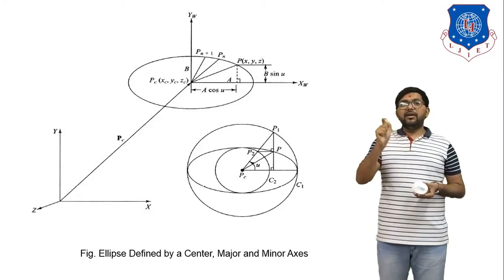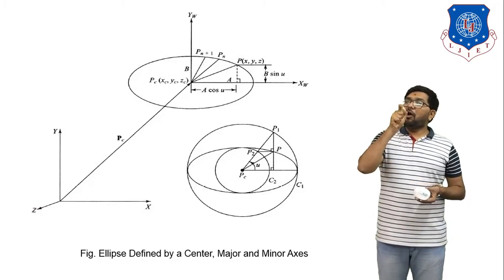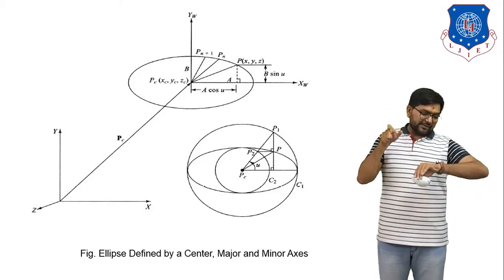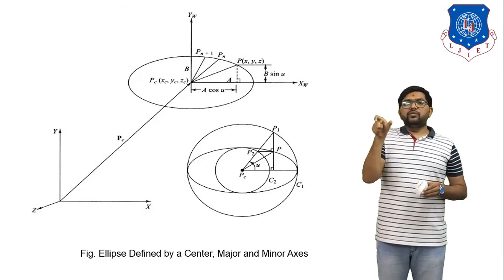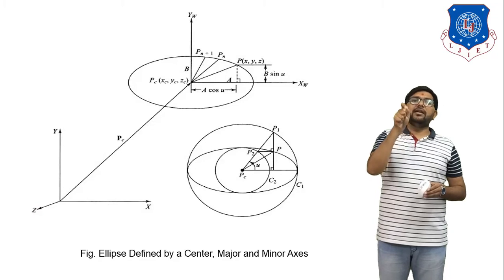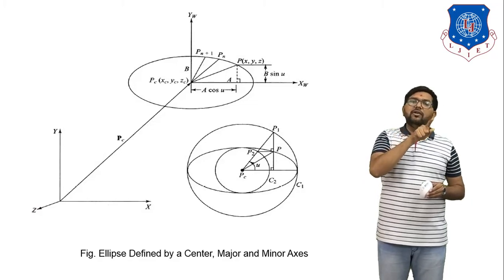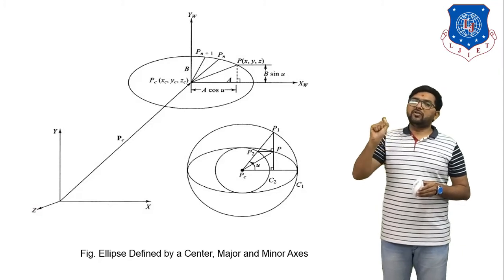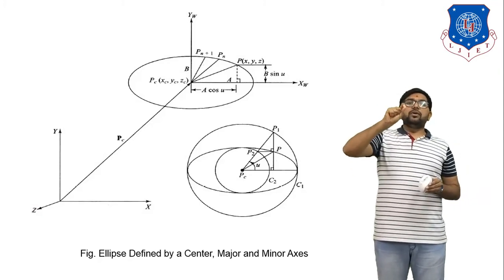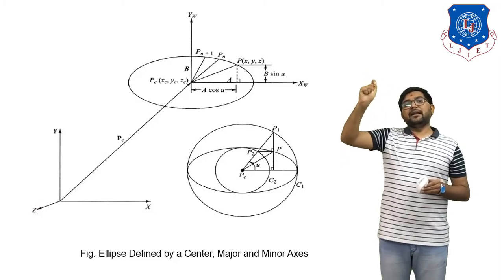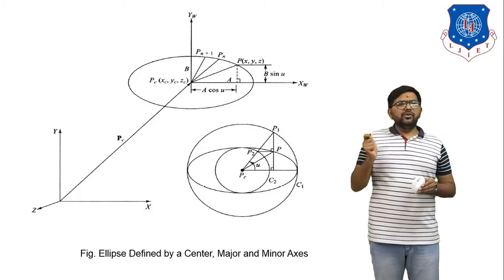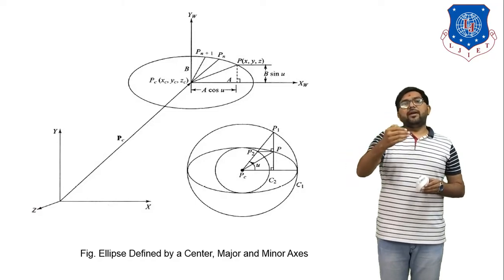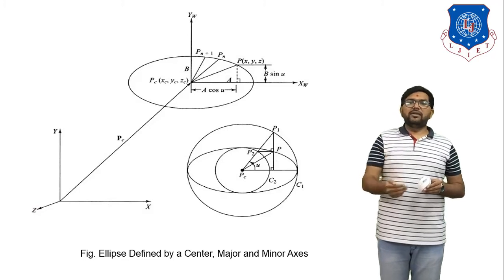We randomly select one point P on the ellipse with coordinates (x, y, z). That point makes one angle with the x-axis, which is u. We continuously increment the angle and find the coordinates on the ellipse. We consider point Pn and the incremental next point Pn+1. We derive this the same way we already derived the parametric representation of a circle, using the same fundamental for the ellipse.